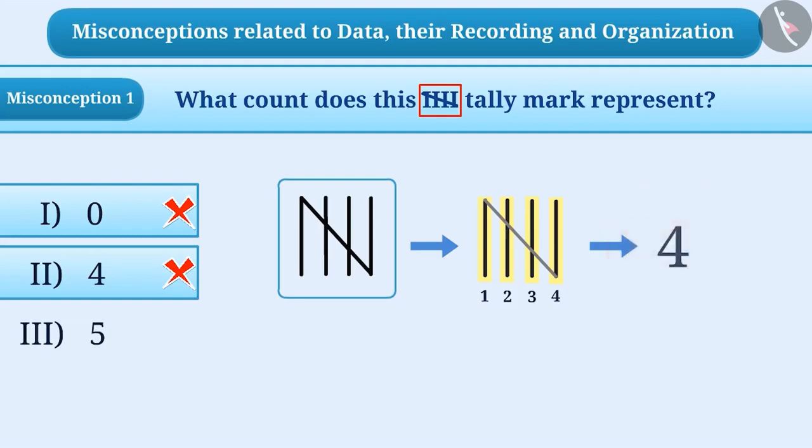Actually, the tally marks representing the number four have only four straight lines. That is, when the tally mark shows four straight lines, its count is four.